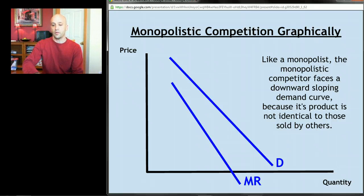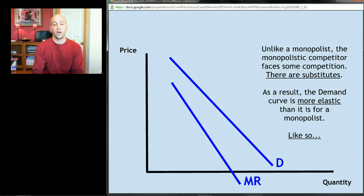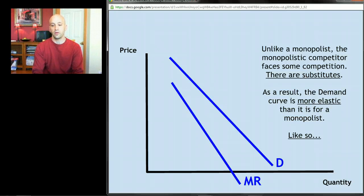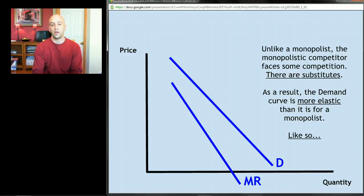The difference between that and a monopoly is that, unlike a monopolist, the monopolistic competitor faces some competition — there are substitutes. As a result, the demand curve for a monopolistic competitor is more elastic. Remember, the more substitutes you have, the more responsive consumers can be to price changes. If you're Nike and you raise the price of your shoes to a million dollars, consumers have lots of substitutes, so the demand curve is more elastic.